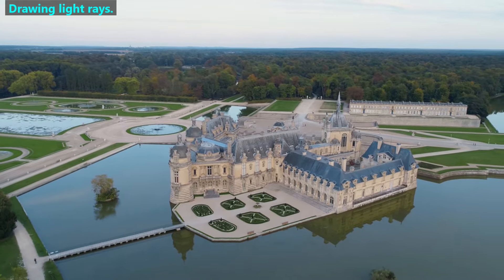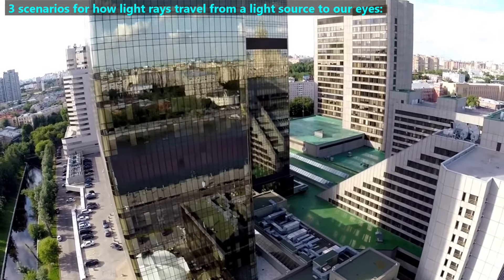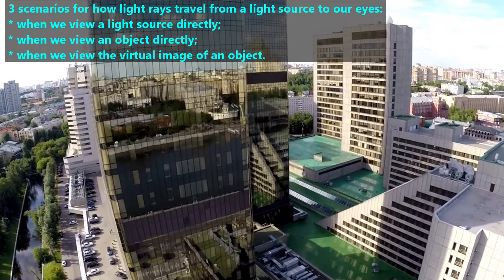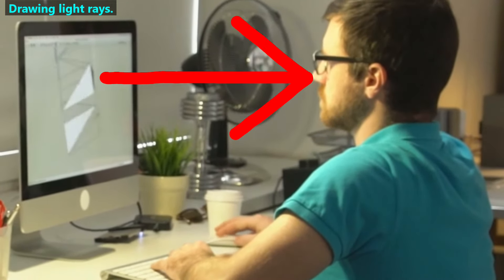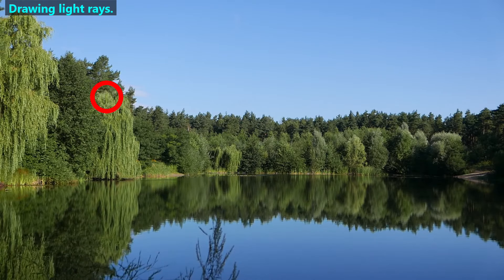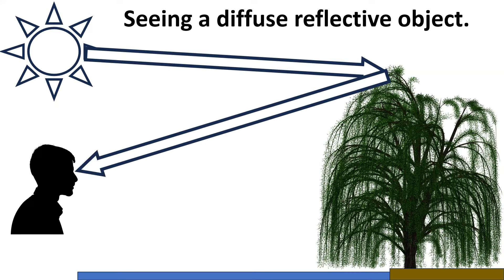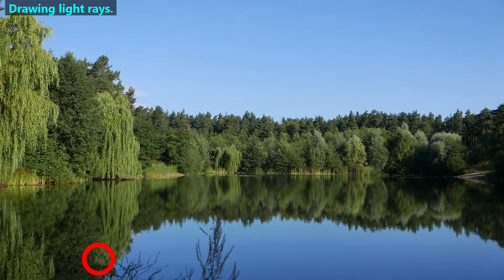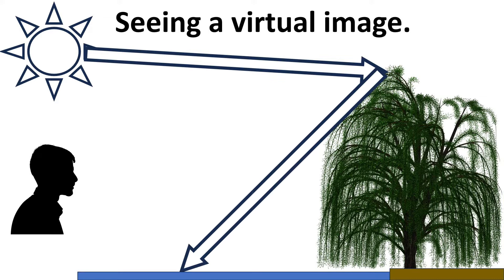Next, we'll introduce how to draw light rays that show us objects and virtual images of objects. There are three scenarios for how light rays travel from a light source to our eyes: when we view a light source directly, when we view an object directly, and when we view the virtual image of an object. When we see a light source, each ray comes directly from the light source into our eyes. When we view a diffuse reflection, we're seeing a light path with two rays: the first from the light source to the object, and the second from that object into our eyes. When we're seeing a virtual image due to a specular reflection, we're seeing a light path with three rays: from the light source to the diffuse reflective object, from that object to the specular reflective object, and from the specular reflective object to our eyes.